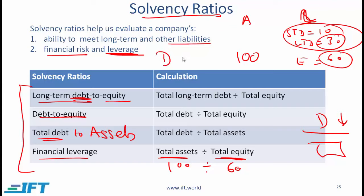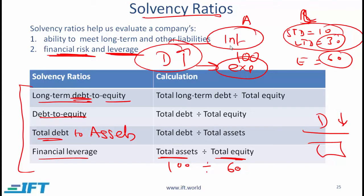Leverage is a measure of how much debt a company has taken on. If the amount of debt is high, financial risk is high, because high debt means the company must make interest payments regardless of operating income. If a company generates very low operating income in a given period but has high debt and high interest expense, it obviously faces major financial risk.